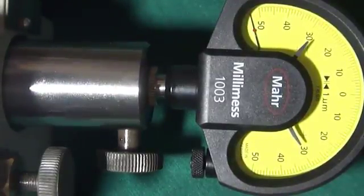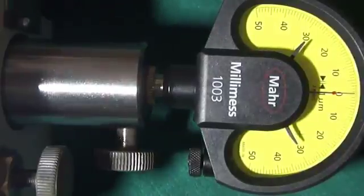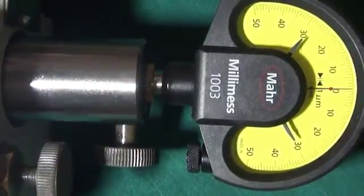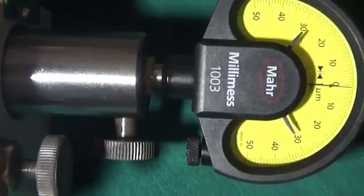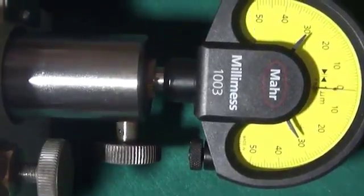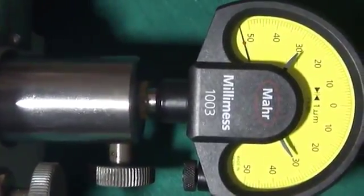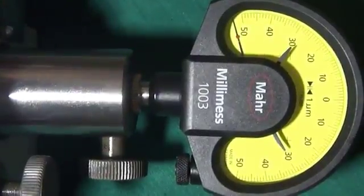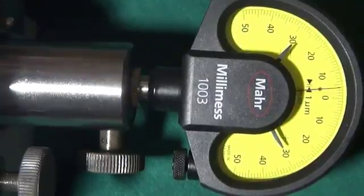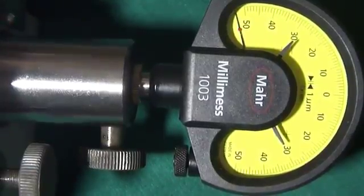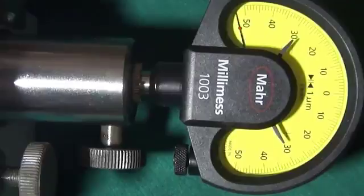We are taking readings now. We can see ovality of this bearing. We can show approximately 4 micron ovality is there in this ring.